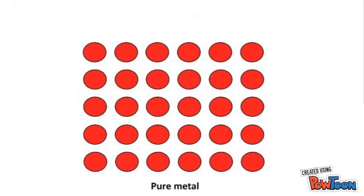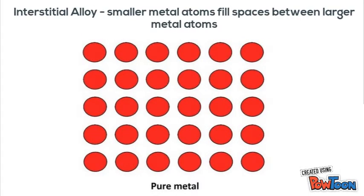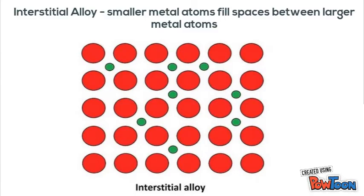The second type of alloy is called an interstitial alloy, where smaller metal atoms fill the spaces between the larger ones. Here we have all the red atoms and then the smaller green ones are placed in between them. Both types of alloys make stronger bonds.